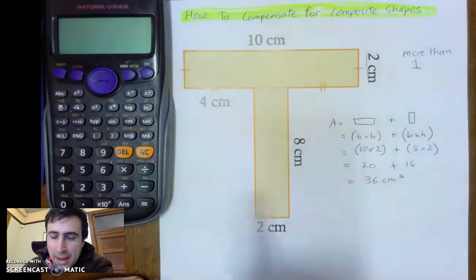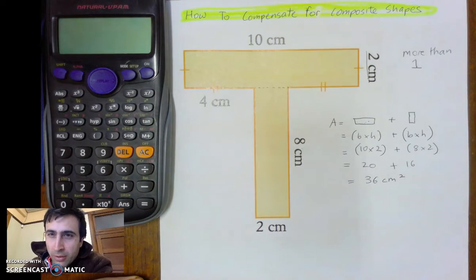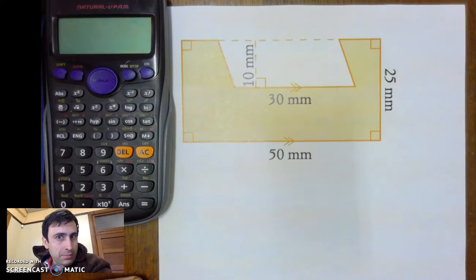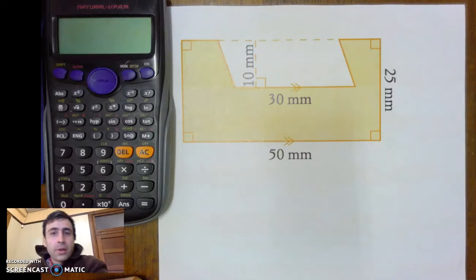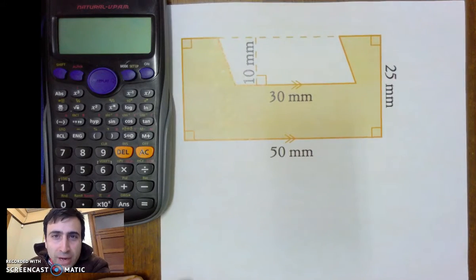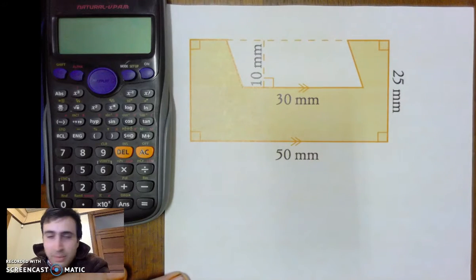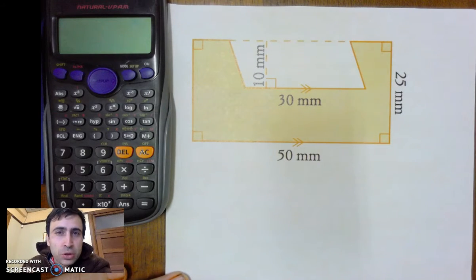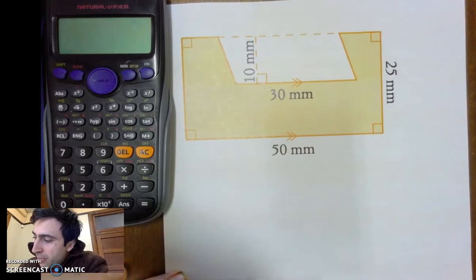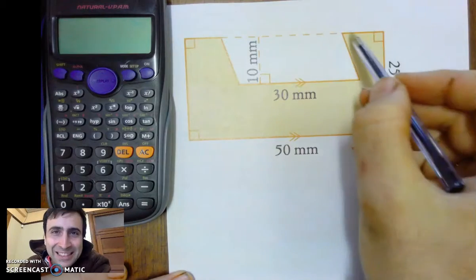But what happens when you get one of these? This is a shape I would call a subtraction shape, or a taking away shape, because what we see, the last one was two rectangles added together.